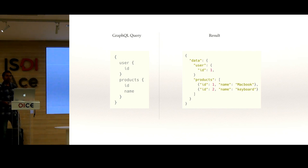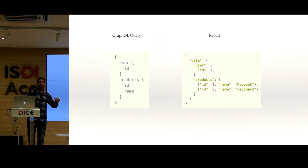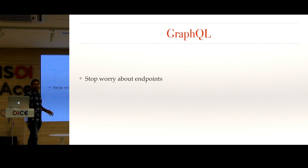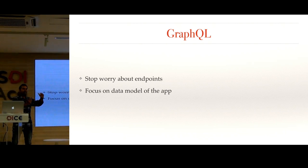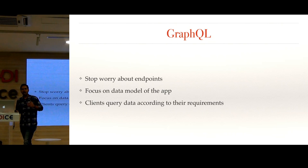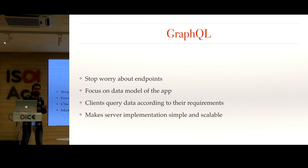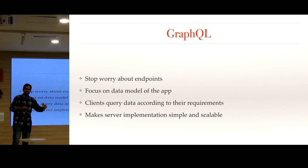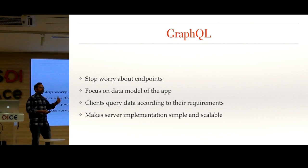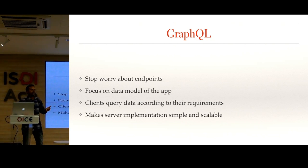GraphQL doesn't have the concept of multiple endpoints. It just has one endpoint, the client sends the query, and the server returns the response. In GraphQL, we don't worry about endpoints at all — we focus on our data model. We know what data properties our application has, we define the data model and how it can be calculated. The server implementation based on this architecture is much simpler and more scalable. We don't need to worry about implementing separate endpoints for mobile or desktop.